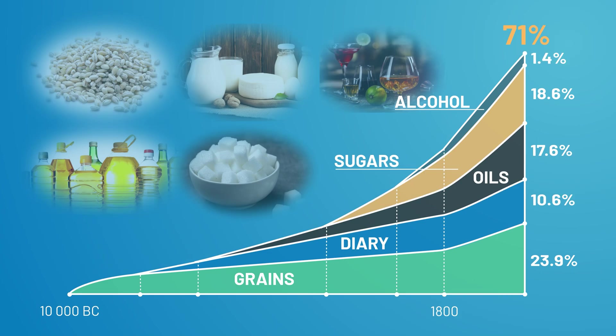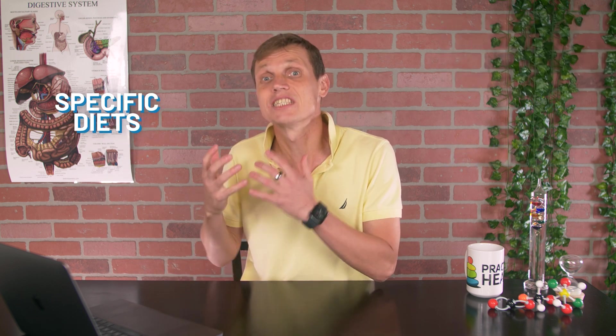In the first video of this series, we talked about how dietary habits have changed over the last 12,000 years, since the Paleolithic period. To put it simply, they changed a lot. Today, 71% of typical Western diet consists of foods that were not available to humans 12,000 years ago. Last week we discussed 7 diet categories, today and next week we'll talk about specific diets.